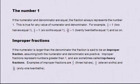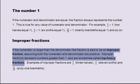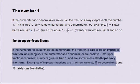Improper fractions. If the numerator is larger than the denominator, the fraction is said to be an improper fraction, assuming both the numerator and denominator are positive. Improper fractions represent numbers greater than one, and are sometimes called top-heavy fractions. Examples of improper fractions are three divided by two, which is three halves; eleven divided by six, which is eleven-sixths; and sixty-one divided by twenty, which is sixty-one-twentieths.